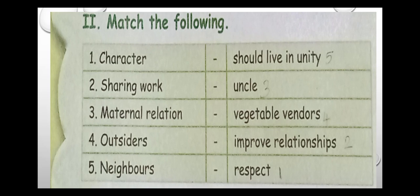The next exercise is match the following. First: character — the answer is respect. Second: sharing work — the answer is improve relationships. Third: maternal relation — the answer is uncle. Fourth: outsiders — the answer is table vendors. Fifth: neighbors should live in unity.